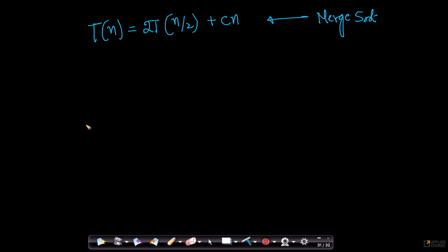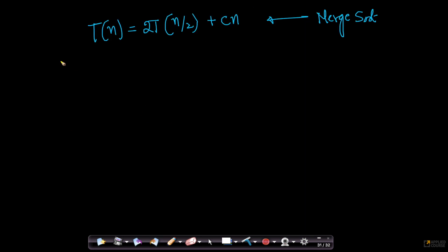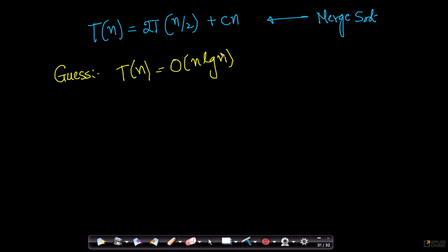Now, just like in mathematical induction, first let us guess an answer. I will make an informed guess that T(n) is O(n log n). What does this mean? This implies that T(n) is less than or equal to c·n·log n. Of course, the constants are different — a constant does not change much here.